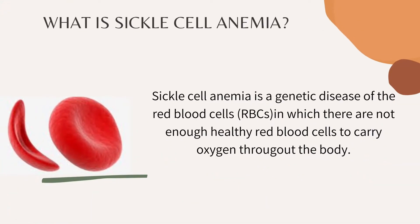I'm going to be giving a very simple definition of sickle cell. Sickle cell anemia is a genetic disease of the red blood cells, in which there are not enough healthy red blood cells to carry oxygen throughout the body. With this condition, the red blood cells have an abnormal crescent shape resembling a sickle. This makes them sticky and rigid and prone to getting trapped in small vessels, which blocks blood from reaching different parts of the body.